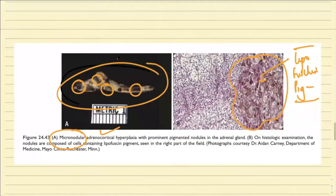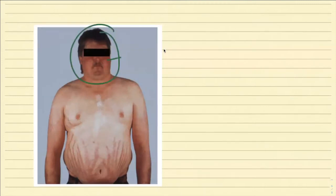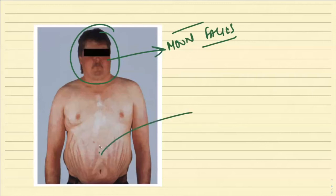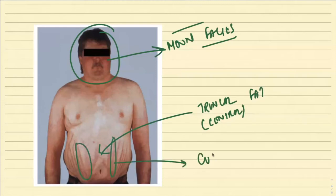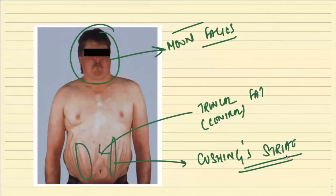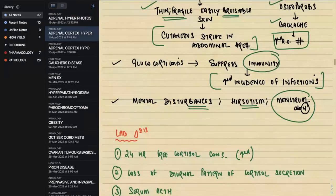Steroids suppress immunity, leading to increased incidence of infections. Patients also have mental disturbances, hirsutism, and menstrual abnormalities. Looking at this photograph: the characteristic moon facies, buffalo hump from the side, truncal fat deposition — central obesity — and the Cushing's striae are all appreciable. In pathology, these are integrated with physiology and medicine, as questions combine all subjects together.